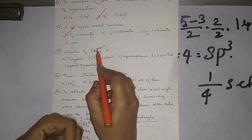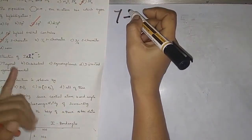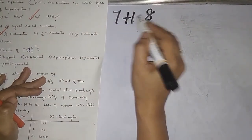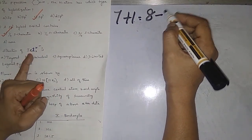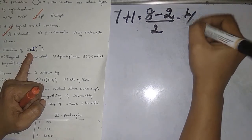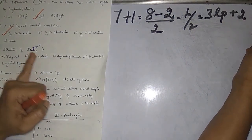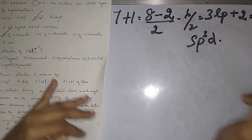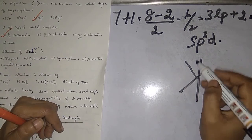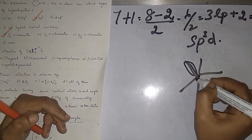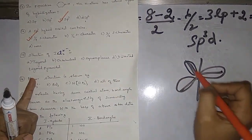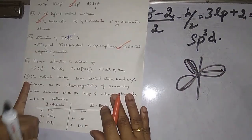The structure of ICl2⁻: iodine has 7 valence electrons plus 1 (for the negative charge) = 8. Then 8 − 2 ÷ 2 = 3 lone pairs, plus 2 bonded atoms = 5, which is sp3d hybridization — base structure trigonal bipyramidal. With 3 lone pairs, the two bonded atoms occupy axial positions, making the structure linear.